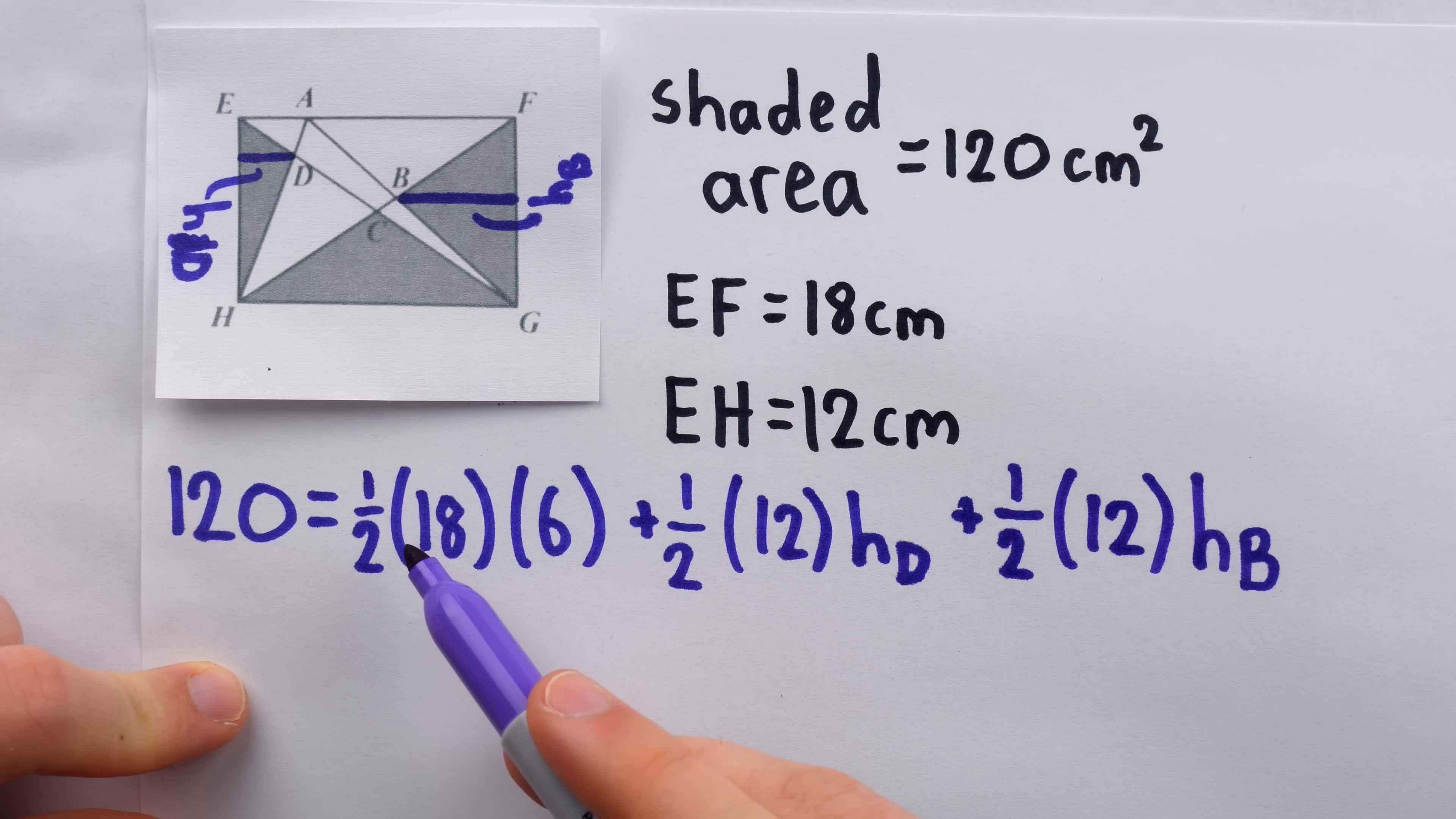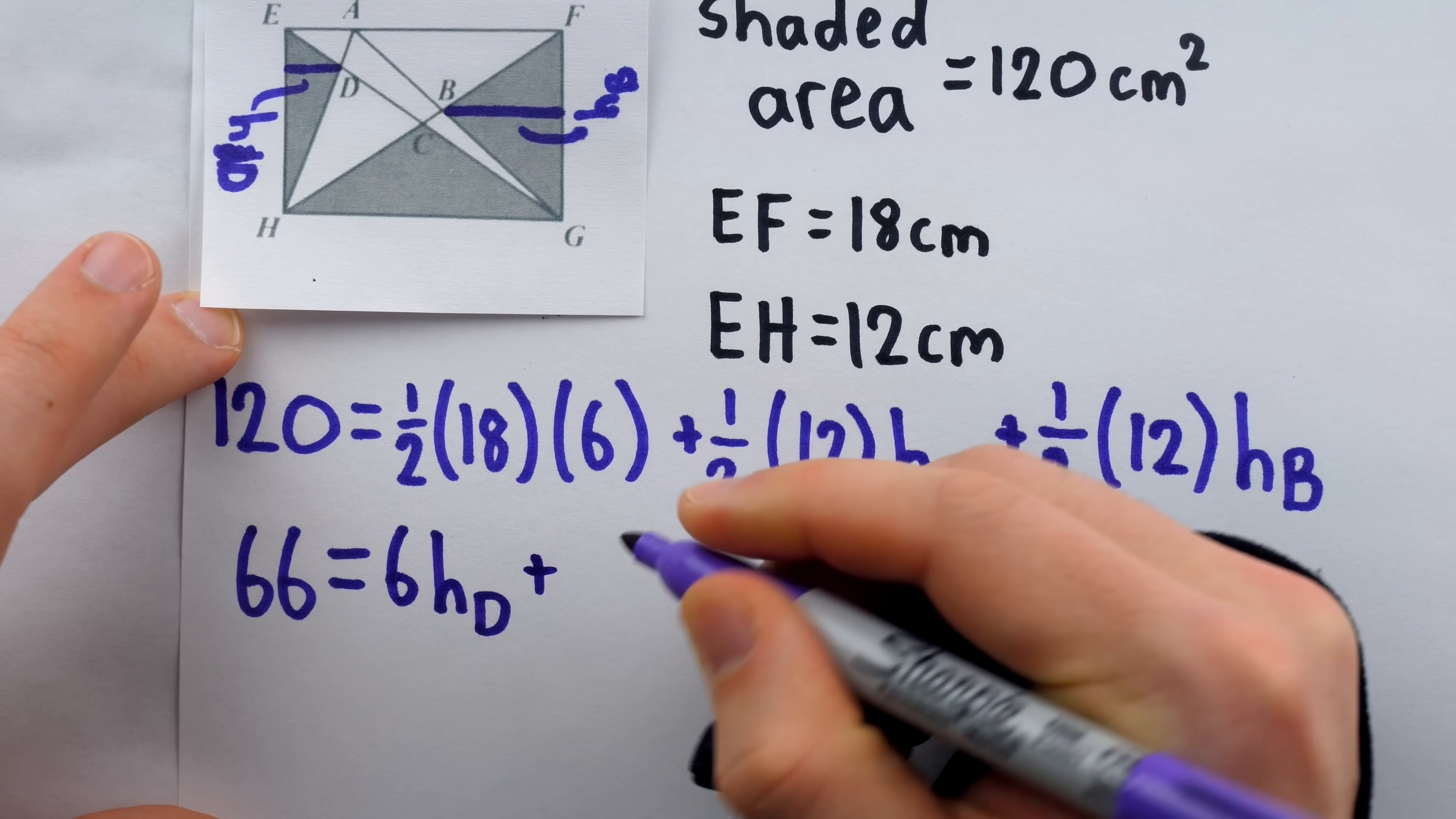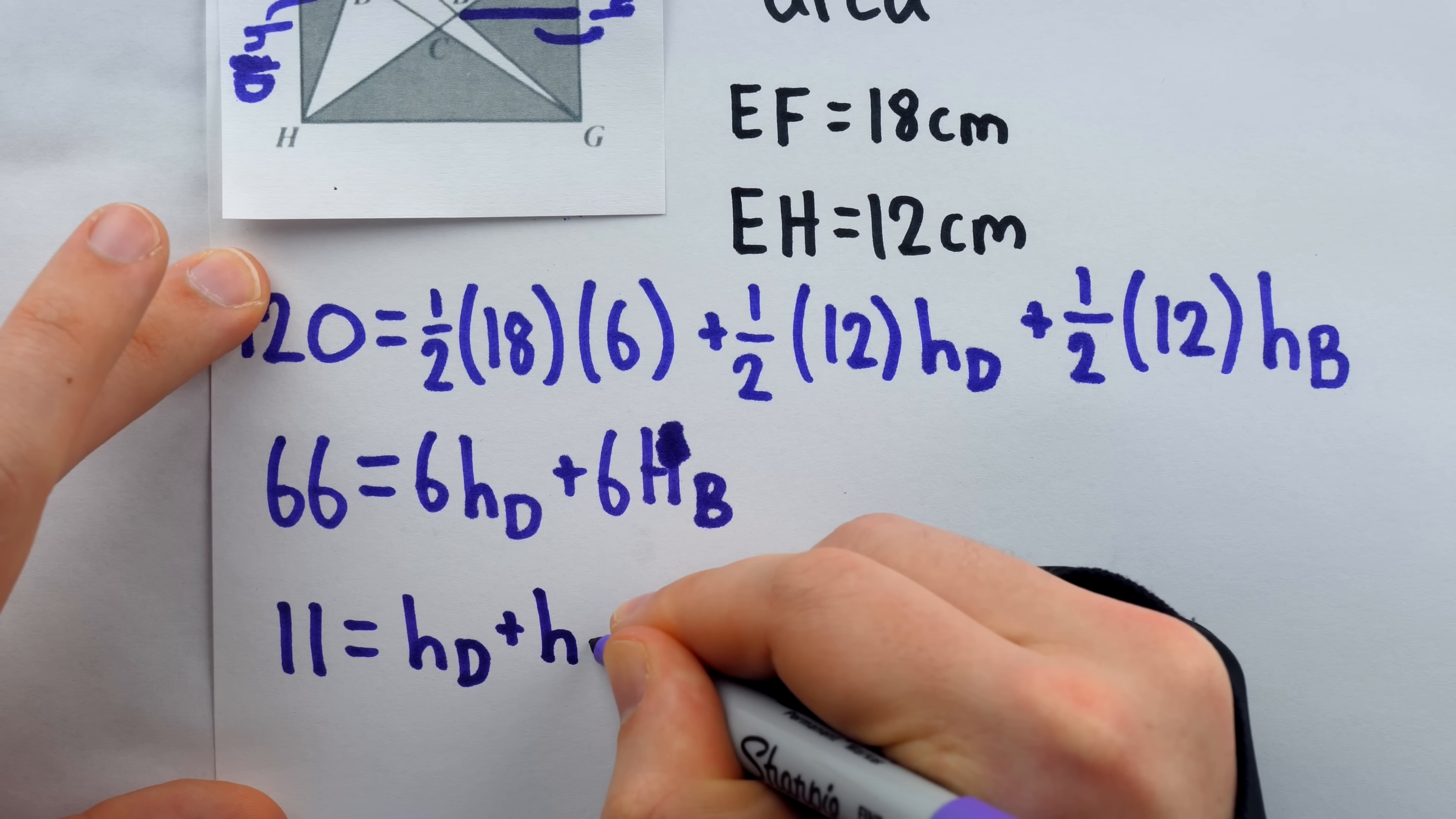Crunching some numbers here, half of 18 is 9, times 6 is 54. Subtract that from both sides, and on the left, we're going to have 66. So 66 is equal to 1/2 of 12 is 6, 1/2 of 12 is 6, so 66 is equal to 6h_D plus 6h_B. Shit, lowercase h, not uppercase H, I don't know what's gotten into me today. Even the strongest man at this point would not be able to resist dividing this whole equation by 6, at which point we would arrive at 11 equals h_D plus lowercase h, uppercase B.